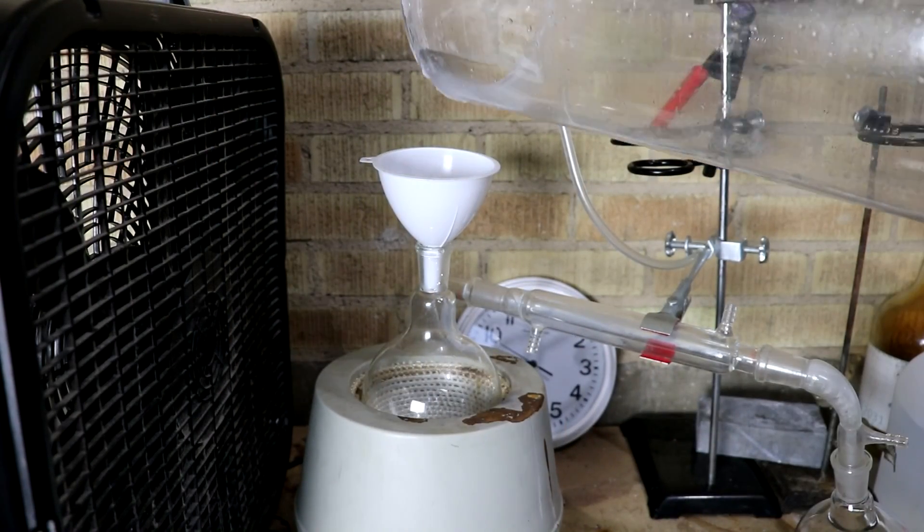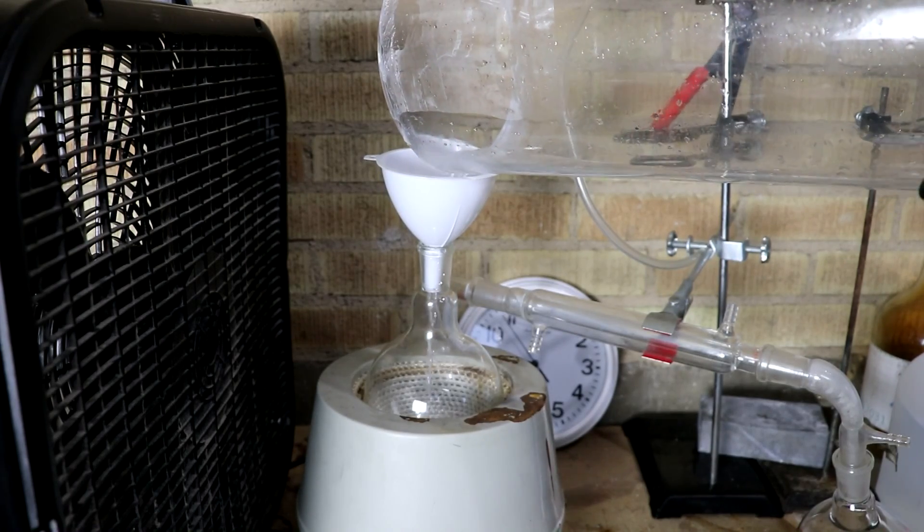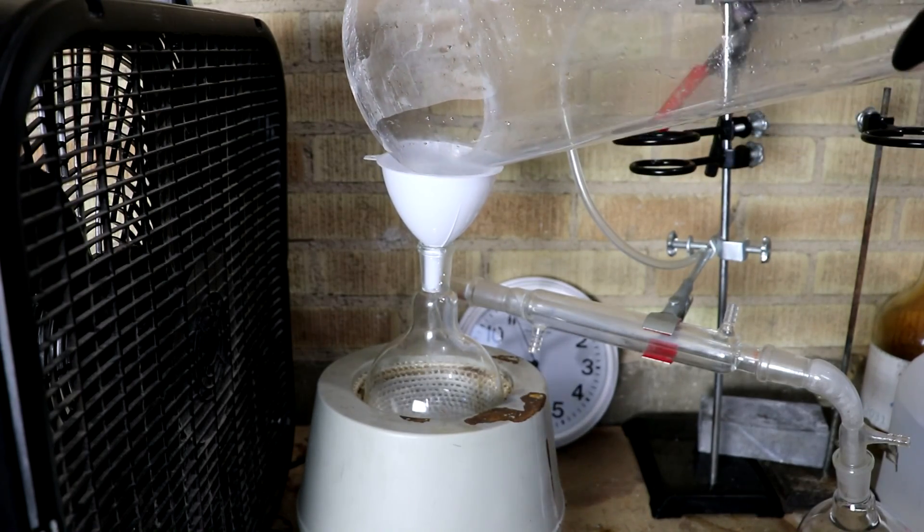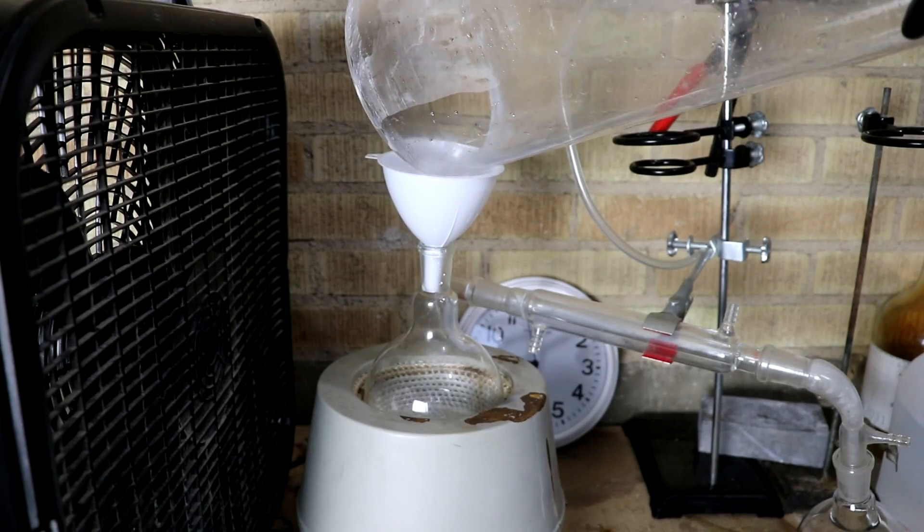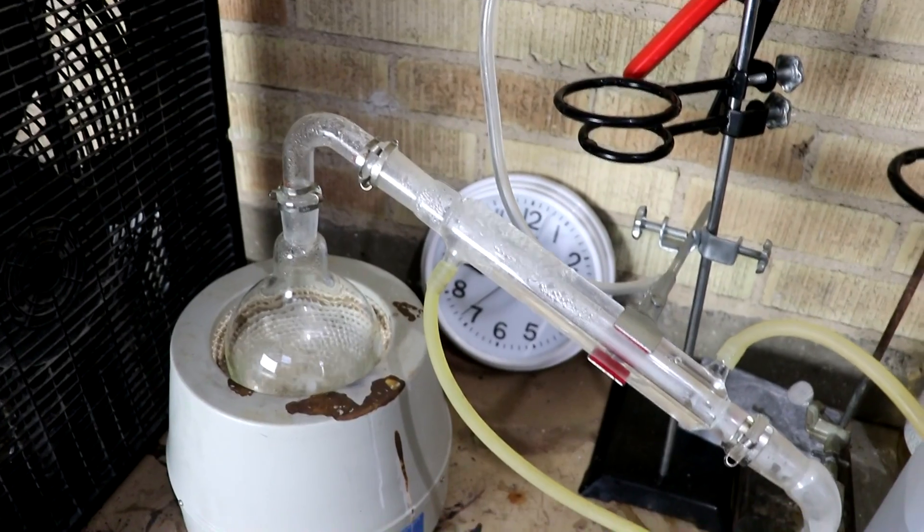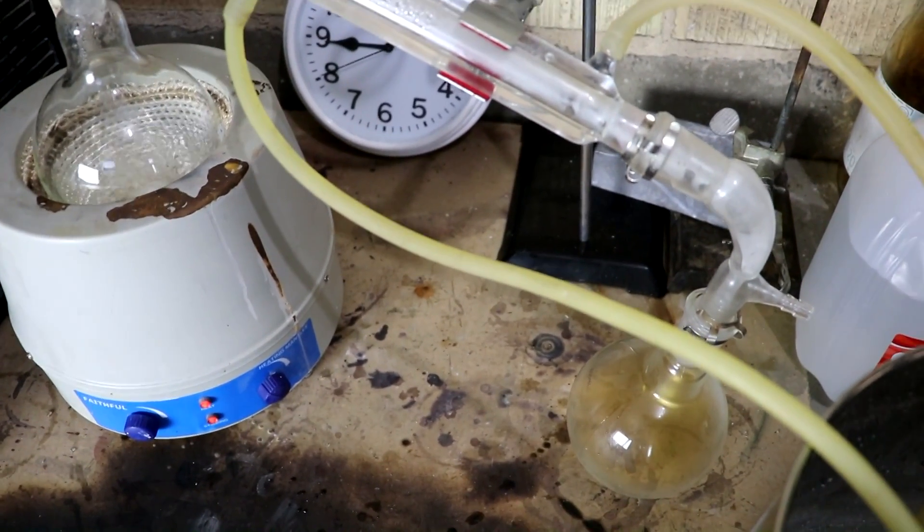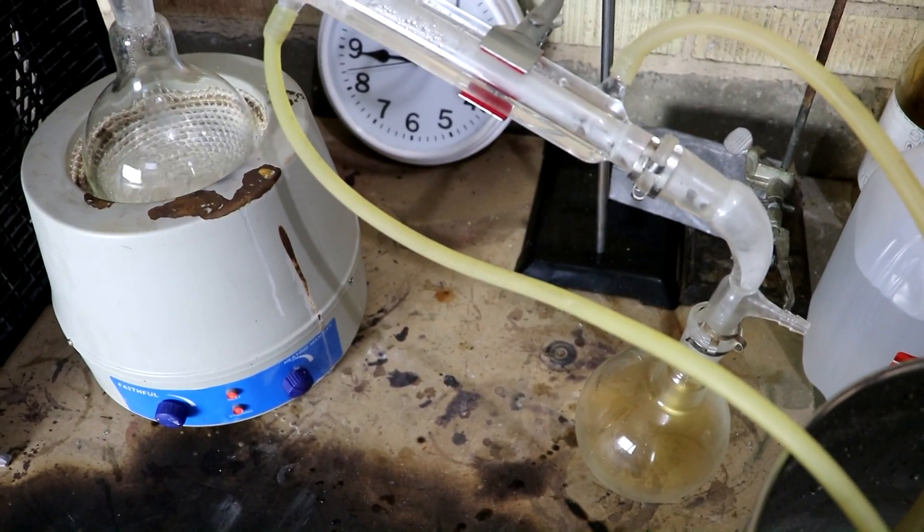Okay. Let's pour our crude acid into the distillation apparatus. Let's throw the stir bar in there with it. That's fine. There we go. Distillation has started. The water's coming over. And the nitric acid should be coming along with it.